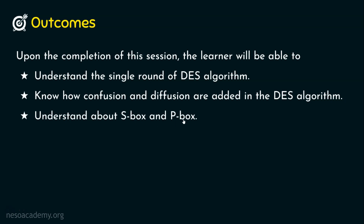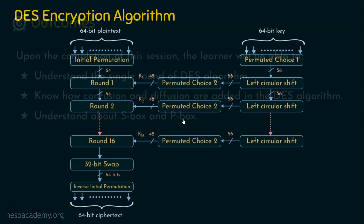Before stepping into the mangler function or the F-function, let's revisit the DES encryption algorithm and also see about the single round of DES quickly. This is the DES encryption algorithm where it takes a 64-bit plaintext and converts it into 64-bit ciphertext. This 64-bit plaintext is given to the initial permutation, whose output is 64 bits, sent to rounds one through 16. For each round, we take a 48-bit round key, generated from the 56-bit key. After round 16, a 32-bit swap is performed, then the result goes to the inverse initial permutation, producing the 64-bit ciphertext.